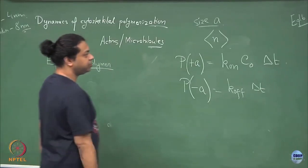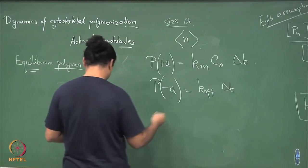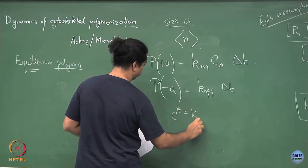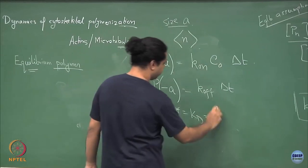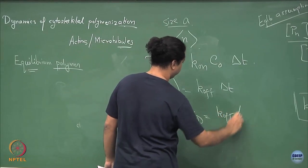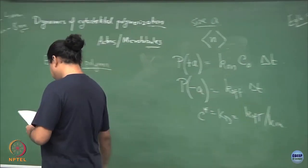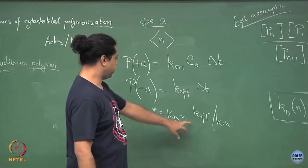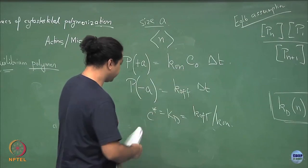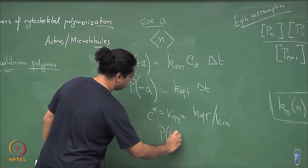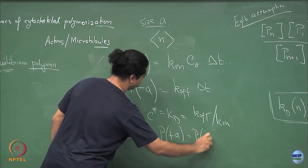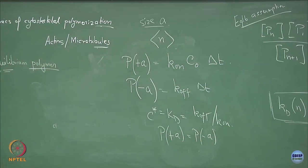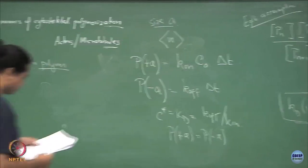If you are doing this equilibrium model, at equilibrium I have that c* or k_d, whichever way I write it, is k_off by k_on. So if I put k_off by k_on in here, what that means is that at equilibrium p(+a) equals p(-a), which is why dp/dt equals 0. On average nothing grows or shrinks.